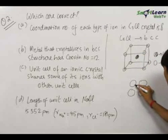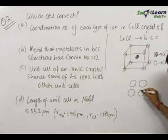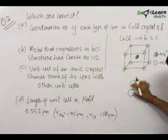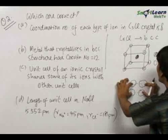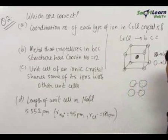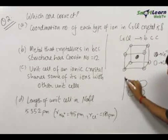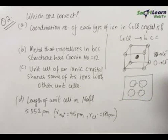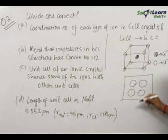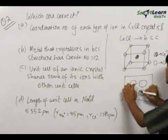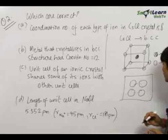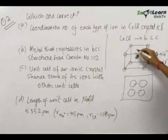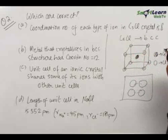Below these four Cl⁻ ions is the Cs⁺ ion, which is touching all four of them, and below that is another similar layer of four Cl⁻ ions. So the structure appears like this from the top. We can clearly see that for the Cs⁺ ion, it is touching four Cl⁻ ions on top and four Cl⁻ ions below. That means the coordination number of Cs⁺ is 8.